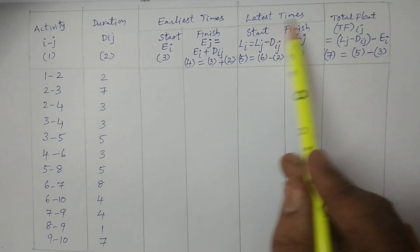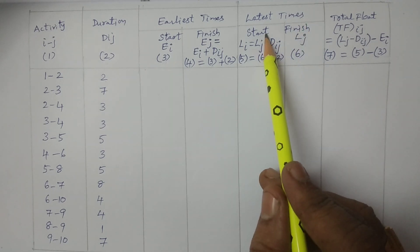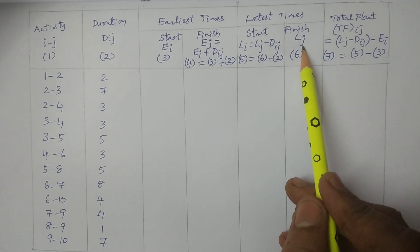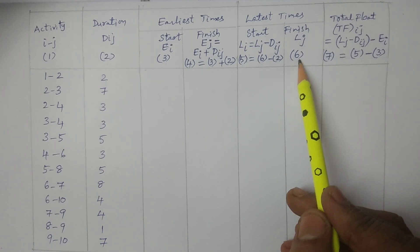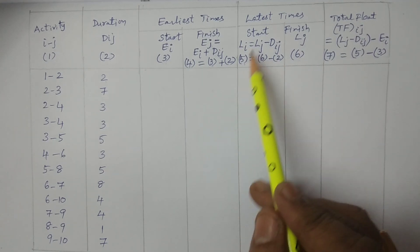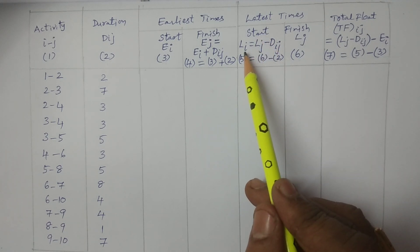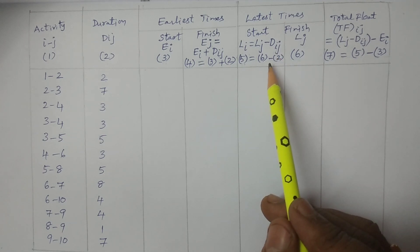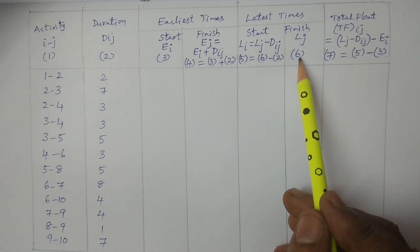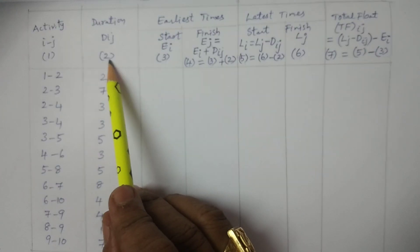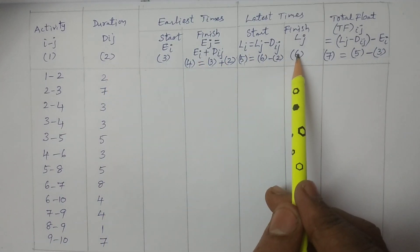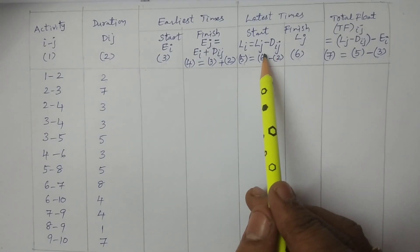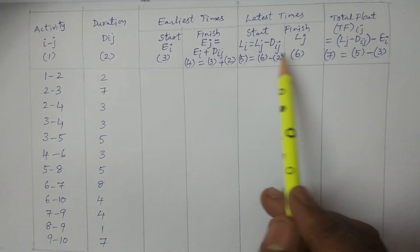For latest times: latest finish is LJ, represented in the sixth column. Latest start LS, that is LI, is equal to LJ minus DIJ — obtained by subtracting the second column from the sixth column. Sixth minus second gives the fifth column. These are the latest times.